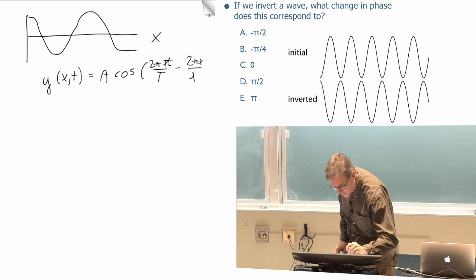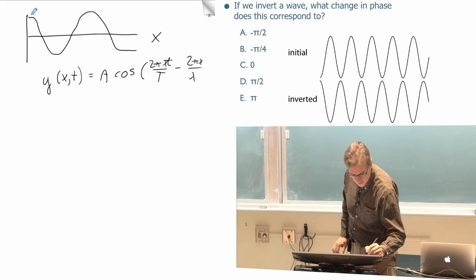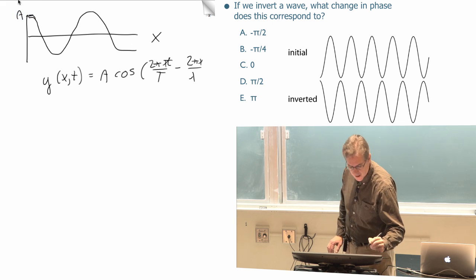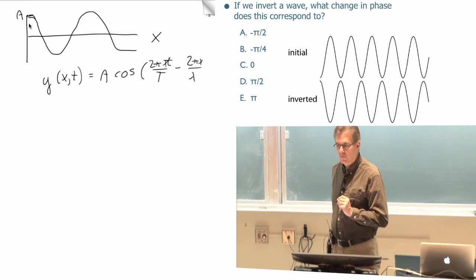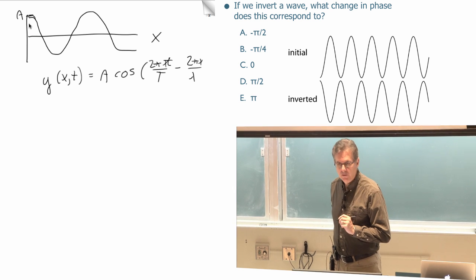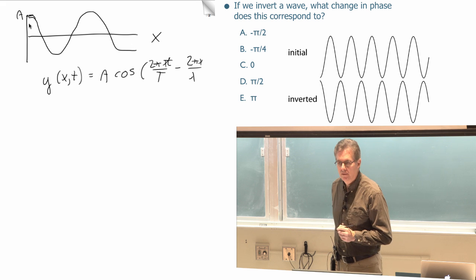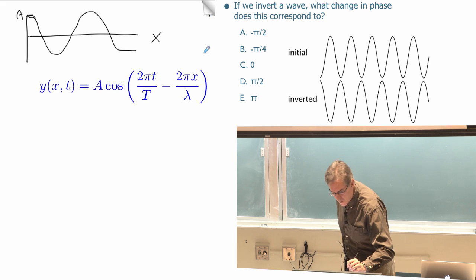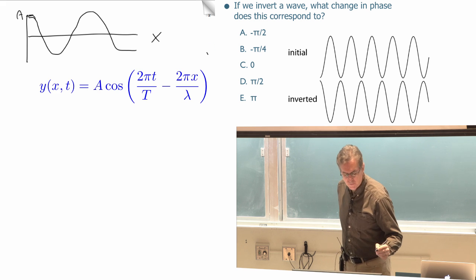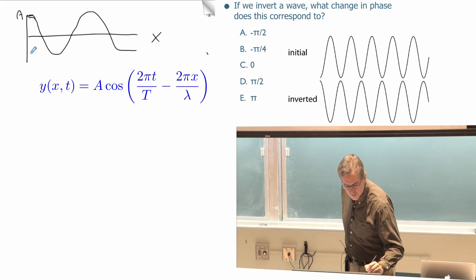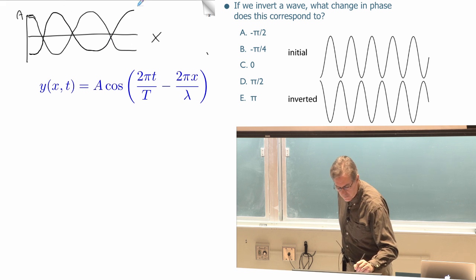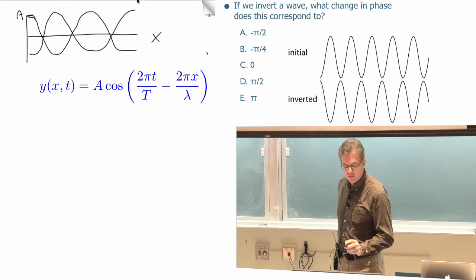Plus what phase would we need to have it be A at x equals 0? What's the phase? We've been dealing with sine waves but let's throw a cosine wave at you. Yeah, zero, we don't need any phase at all.